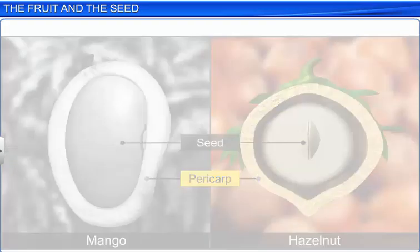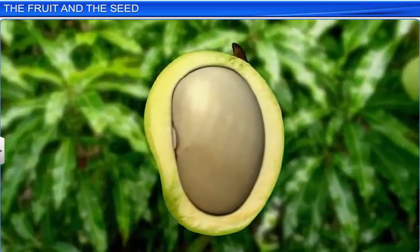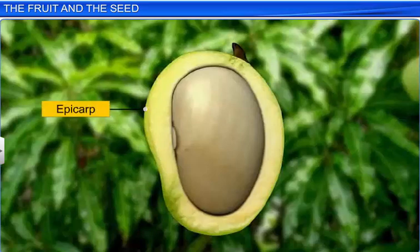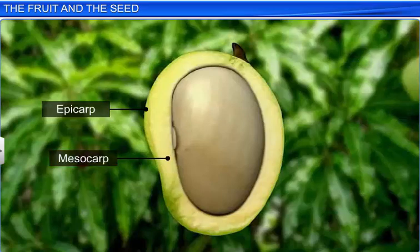In the mango, the pericarp is differentiated into three distinct layers: the epicarp, which is the outermost layer or peel; the mesocarp, which is the thick pulpy middle layer; and the endocarp, which is the innermost layer that directly surrounds the seed.